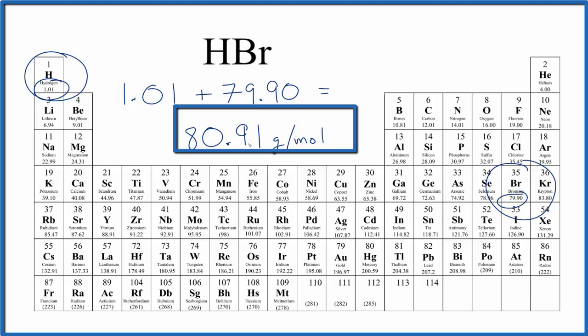What this number means is that if we have one mole of HBr, it's going to have a mass of 80.91 grams. Or conversely, if we had 80.91 grams of HBr, that would be one mole of HBr.